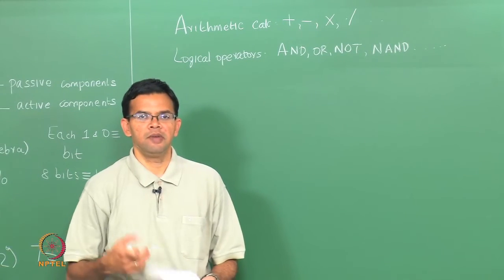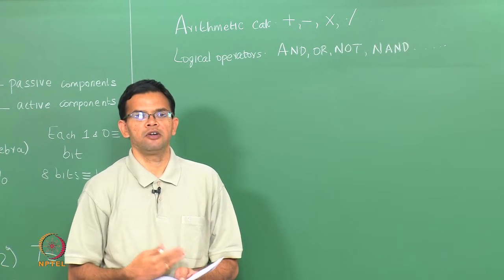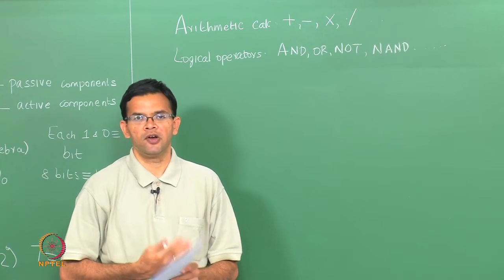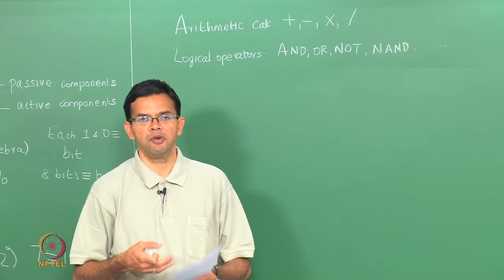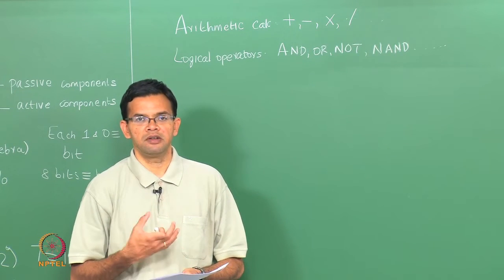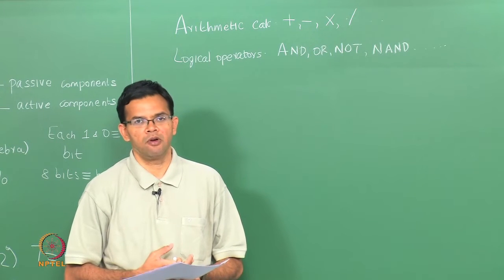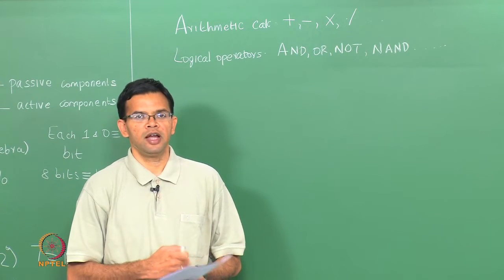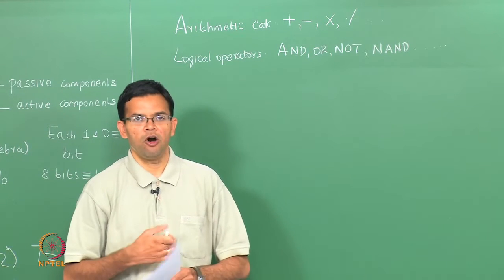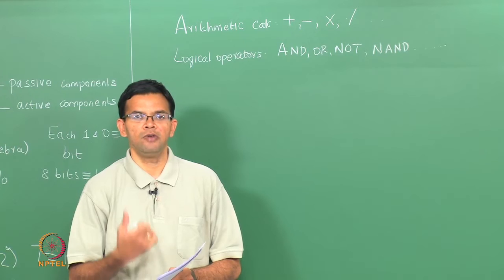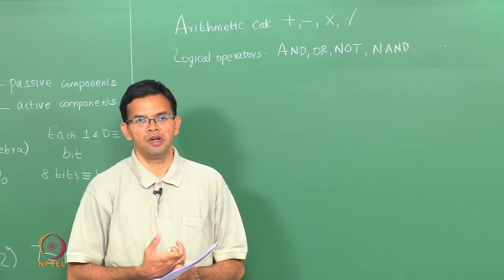These operations can basically be performed by using your diodes and transistors, which are your active components, and the currents through these can be modulated by using resistors and capacitors, which are your passive components. We will look at one very simple example: we will consider an OR gate and see how we can execute this using simple diodes.